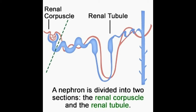Did you know? Marcello Malpighi, a 17th century Italian anatomist, discovered and described the renal pyramid and the renal corpuscle. In honor of Malpighi, the two are named the Malpighian pyramid and Malpighian corpuscle, respectively.